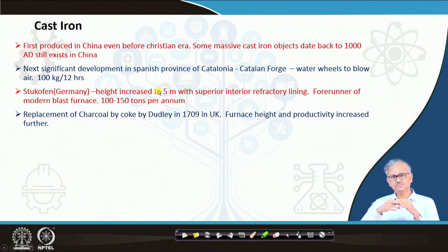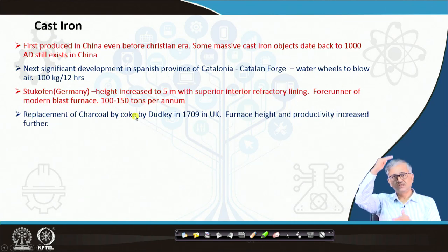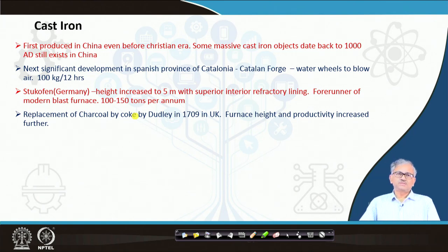So far all these furnaces ran on wood charcoal. Then charcoal was replaced by coke in Dudley, by Dudley, in 1709 — early 18th century in the UK. This was a great innovation. With coke you could increase the height of the furnace because coke is stronger than charcoal — charcoal fragments and produces dust under overburden, but coke does not — resulting in increased furnace height and productivity.